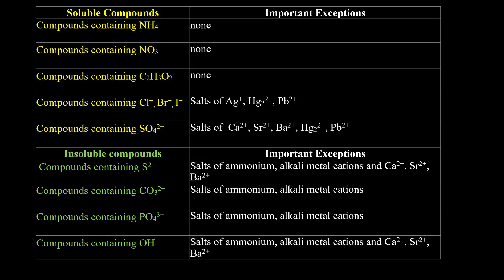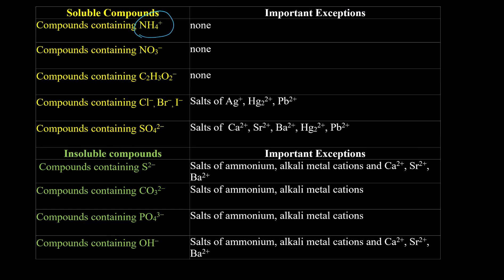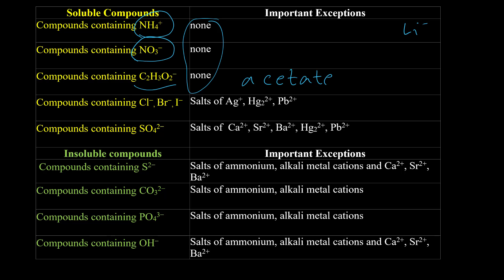The solubility chart has two different parts. The first part covers soluble compounds, with rules and some exceptions. For example, ammonium cation is always soluble — if you have an ionic compound with ammonium cation it is always soluble in water. Nitrate anion is always soluble with no exceptions. Acetate anion is always soluble. In addition, elements from group one of the periodic table — lithium, sodium, potassium, and so on — are always soluble. For some anions like sulfate, chloride, bromide, and iodide, there are some exceptions.